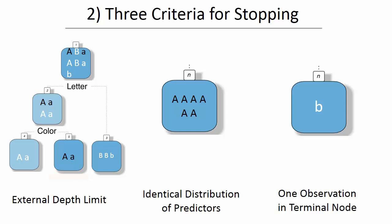The second stopping criteria is identical distribution of predictor variables. In our example here, we notice that we cannot separate this group any further. Lastly, if we only have one observation in a node, we cannot split the data any further.